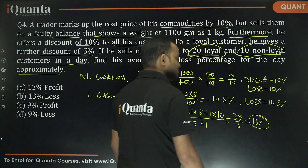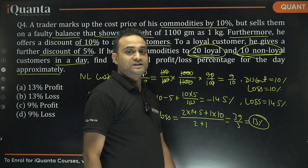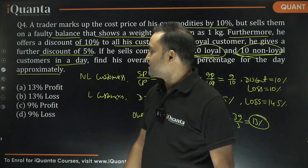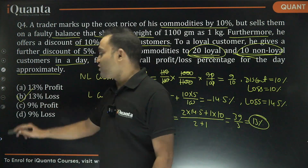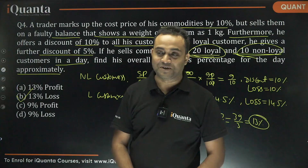So overall there is a loss of 13%, and the answer is option B.